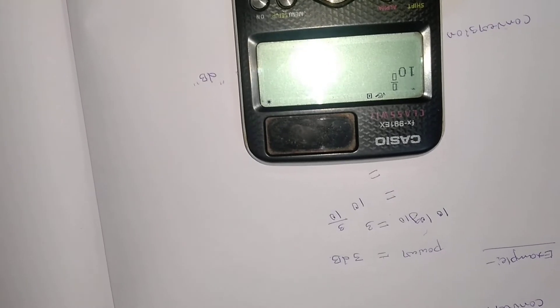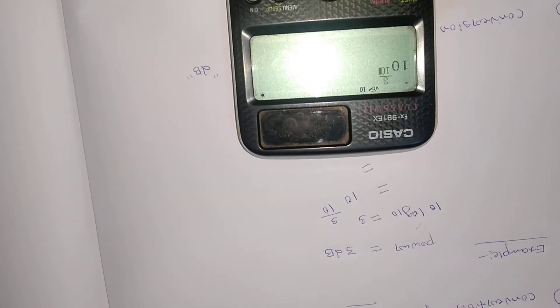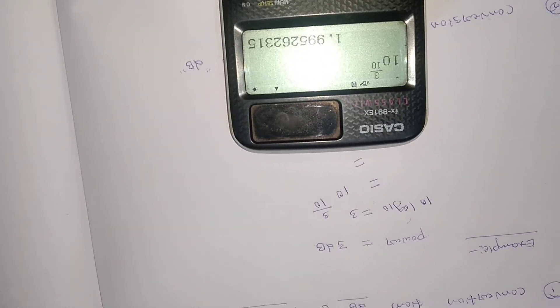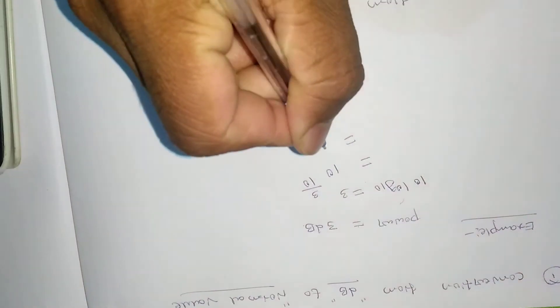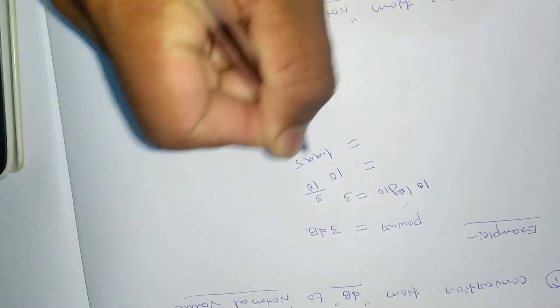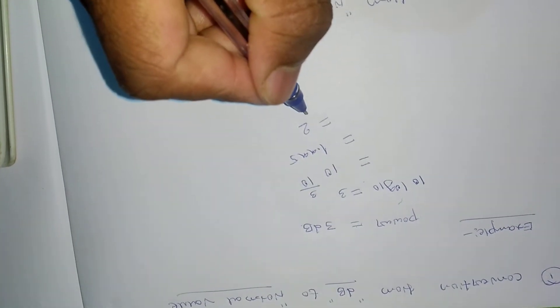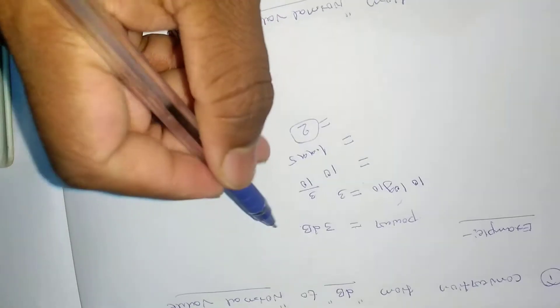Okay, so 10 to the power 3 divided by 10. Okay, so I need to calculate this one. It is coming up to 1.99, so this is 1.995 which I can write as 2 here.